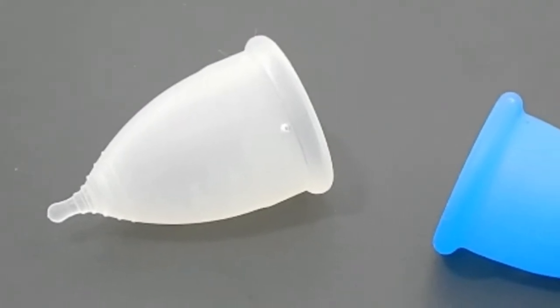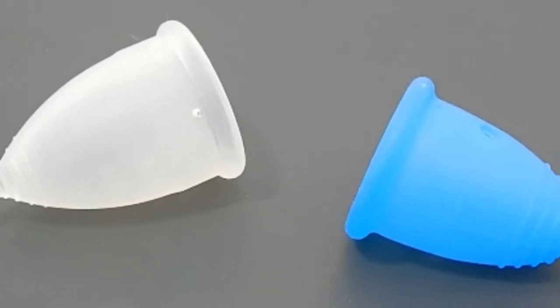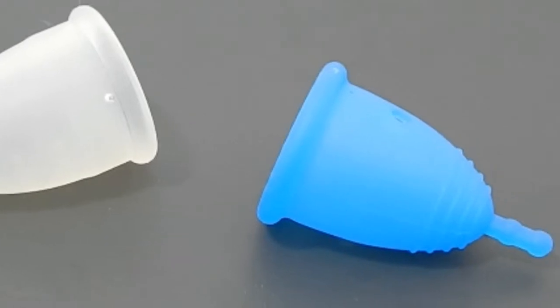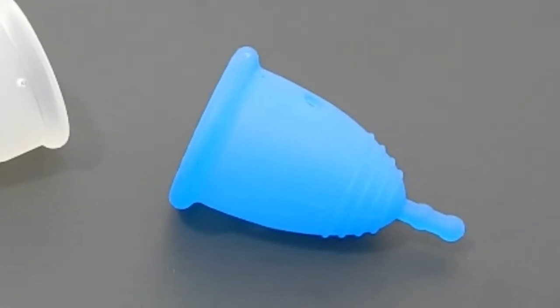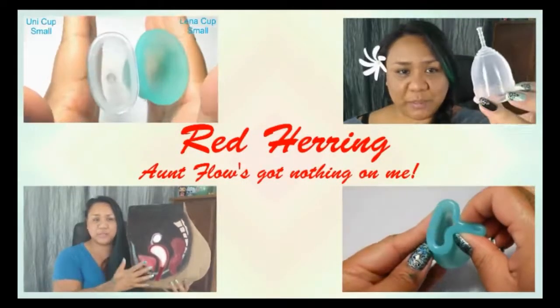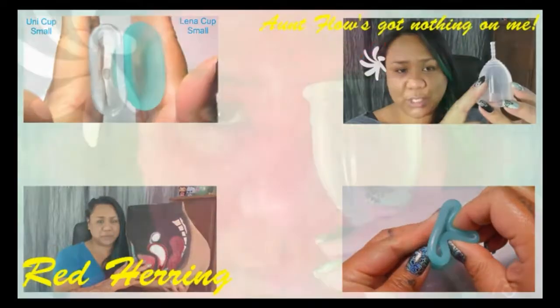This is a squish comparison between the large Casco cup and the large Meluna in the classic version. Hello everyone, it's Red Herring. Please bear with me, I'm losing my voice again.